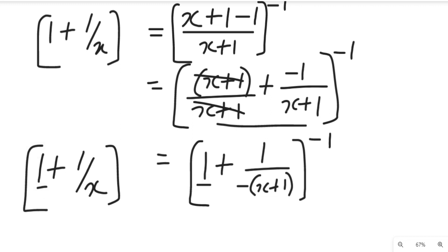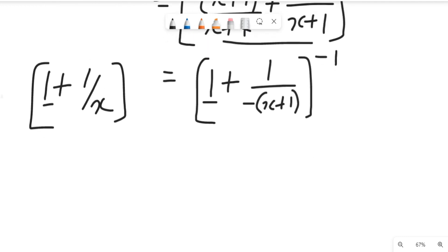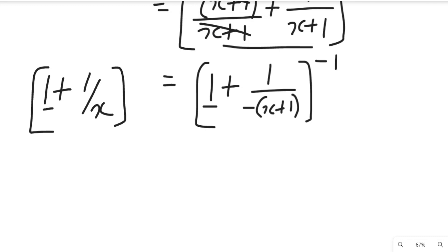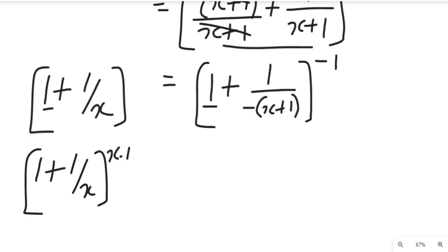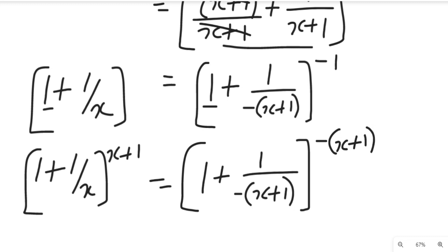Since we have our one, remember that this expression has a power, and that power is x plus one. So we are going to bring that power into this expression. When we bring that power in, we now have one plus one divided by x, all raised to the power of x plus one, equal to one plus one divided by negative x plus one, all to the power of negative x plus one.